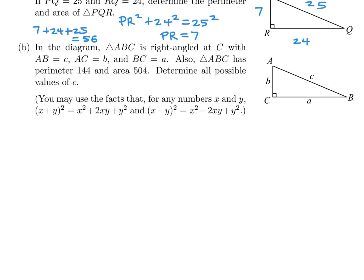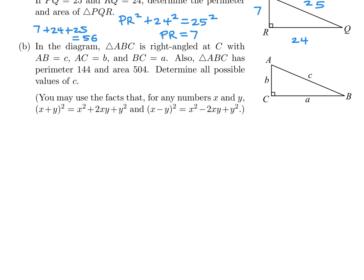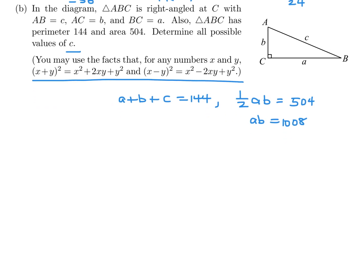Part B. In the diagram, triangle ABC is right angle at C with AB equals c, AC is b, and BC is a. Also, triangle ABC has a perimeter of 144 and area of 504. Determine all possible values of c. Okay, so based on the information they gave me, A plus B plus C is 144. And 1 half base times height, which in this case is A times B times 1 half, is 504. Or AB is 1,008.